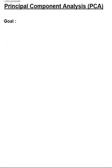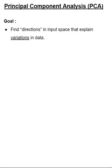To start off, let's understand the goals. The first goal of PCA is to find directions in input space that explain variations in data. The word variations in data is very important to know, and we'll explore more details as we go along.